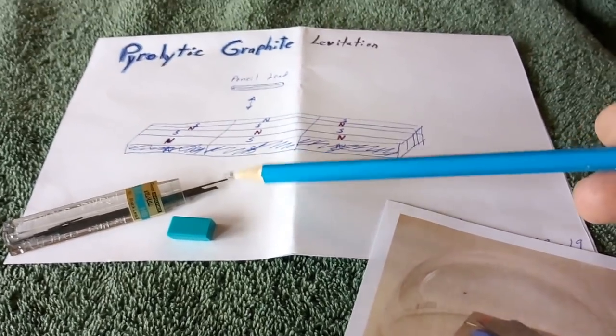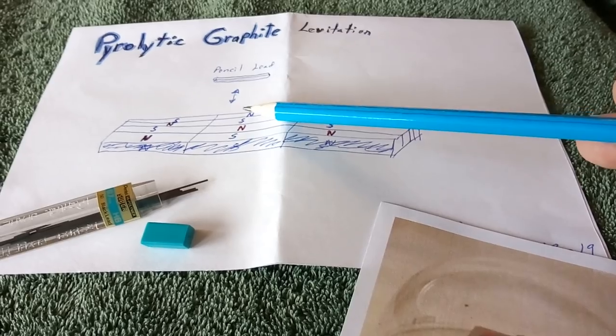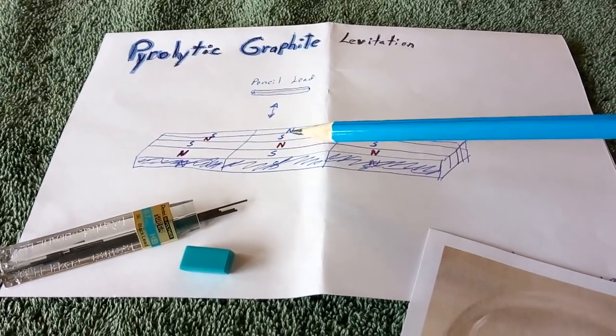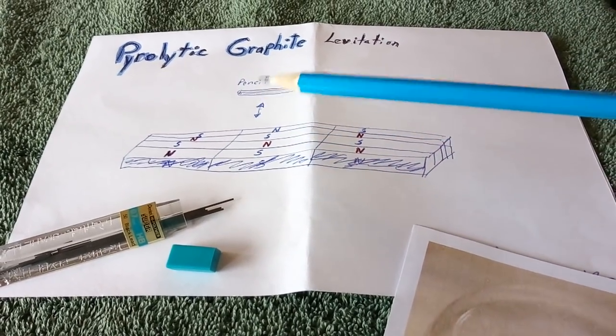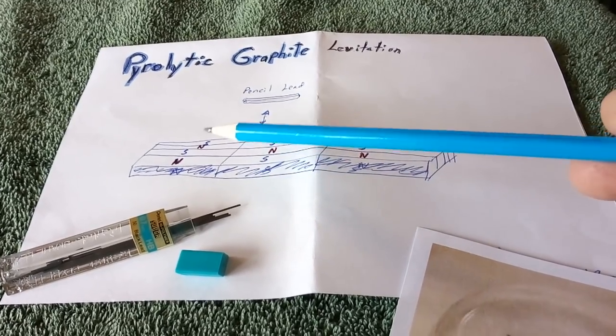I don't even know if it's pyrolytic graphite, it just worked. I'm not sure it's diamagnetic. I believe they say where it's repelled by a north or south of a magnet and if you put an array of magnets it'll levitate.